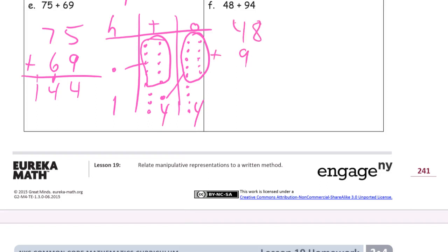48 plus 94. 8 and 4 is 12, that's a 10 with 2 ones. Here's a 10, this 9 and 1, that makes it 10, and 4 more is 14. 14 tens is 100 with 4 tens left over. That's 142.